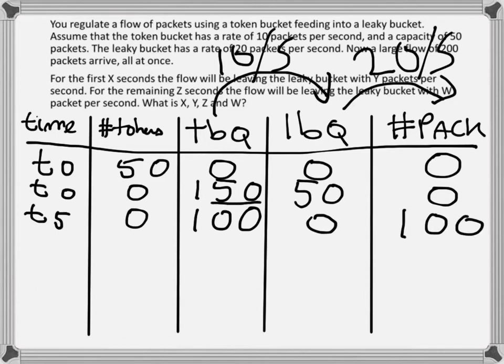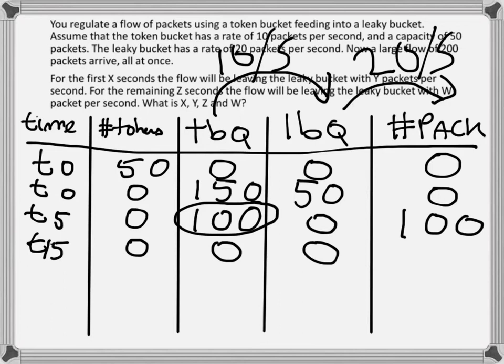From here, I focus on the remaining 100 packets. They are leaving the token bucket at 10 packets per second, dripping down to the leaky bucket, but since the leaky bucket has a capacity of 20 packets per second, they drip out straight away. So the only bottleneck is the token bucket to the leaky bucket at 10 packets per second — it will take 10 more seconds. So I track from second 5 to second 15. After 10 more seconds there are no tokens and no packets remaining in either bucket, and in total all 200 packets have been processed.